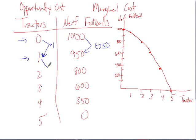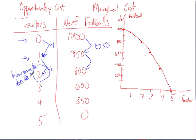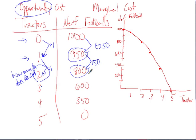To go from producing one tractor to two tractors, how much are we giving up in terms of footballs? How much does this second tractor cost? Before, we were producing 950 Nerf footballs. Now we're only producing 800 Nerf footballs. So we gave up the opportunity to produce 150 Nerf footballs. We can say that this second tractor cost us 150 Nerf footballs — that's the marginal cost going from 1 to 2.